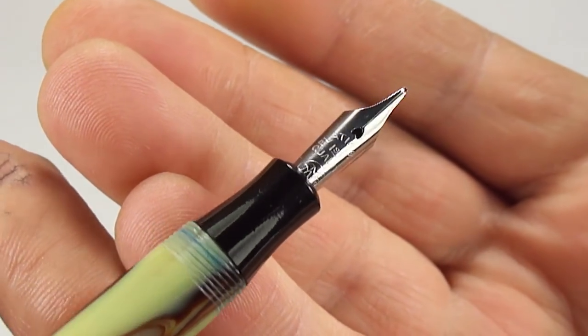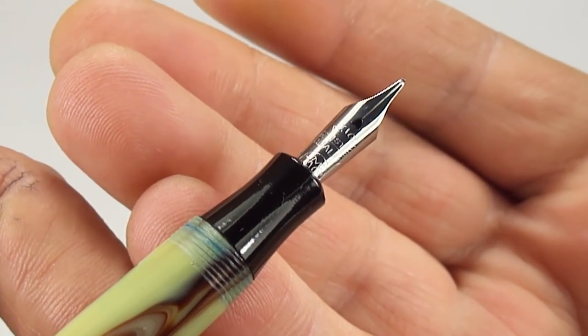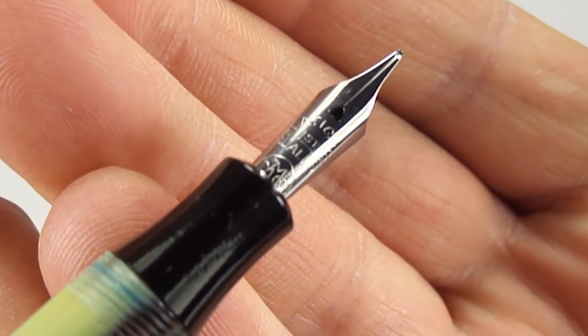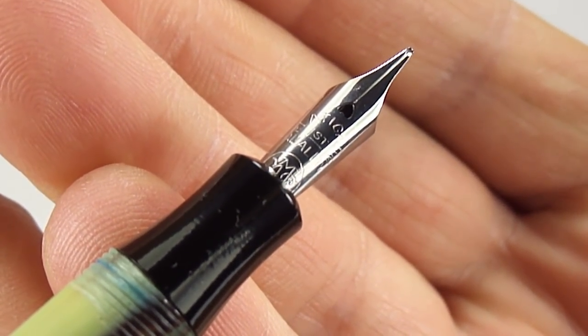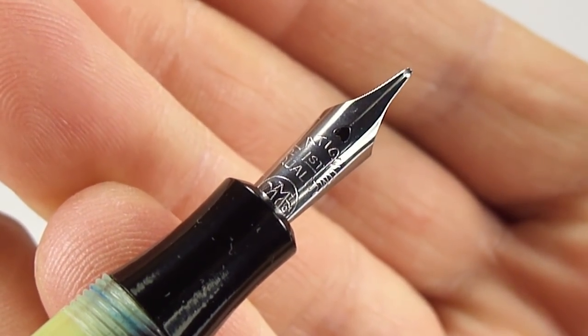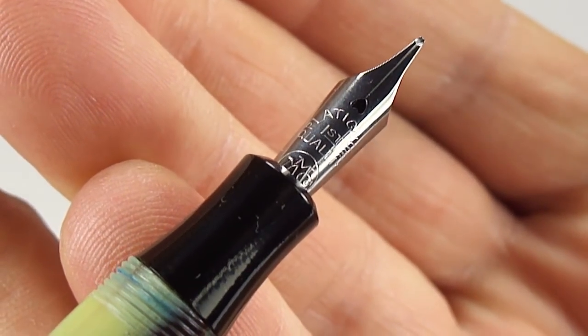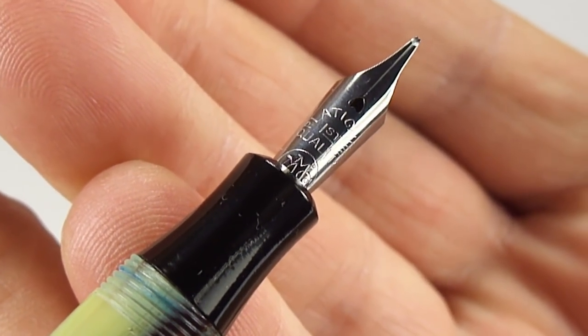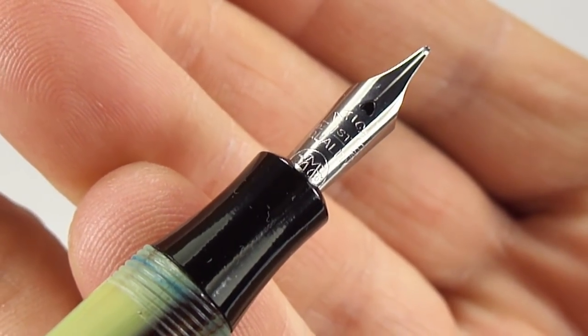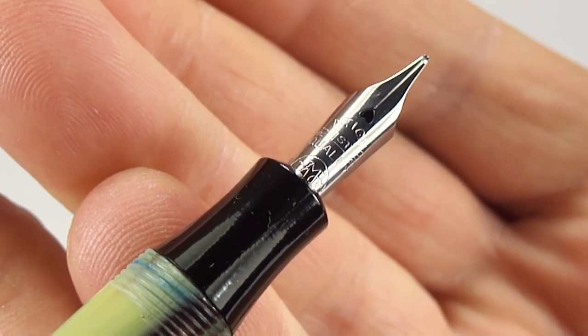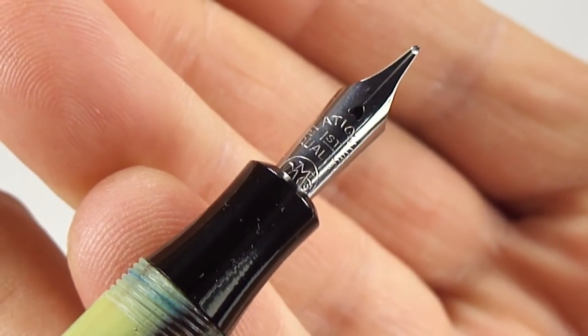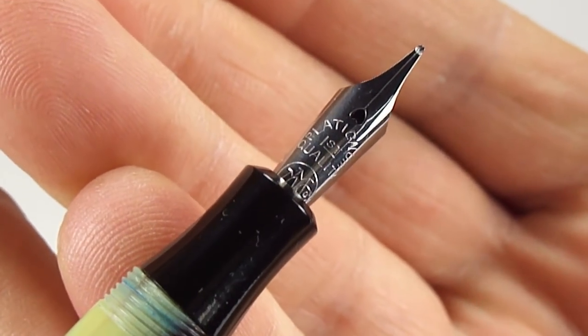If I bring it nice and close for you, you'll see that it says Platinum First Quality, and then underneath you'll see a symbol that has an M and M and a C. That represents the Mentmore Manufacturing Company, so the nib was made by Mentmore, and as I believe this pen was made by Mentmore as well.